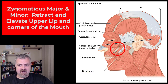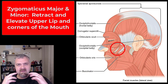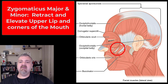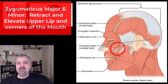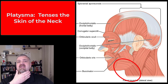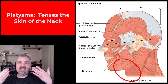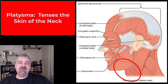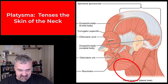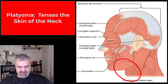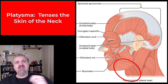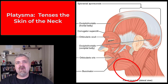The zygomaticus muscles are involved in smiling — they retract and elevate the upper lips, as you can see here. The platysma is a very thin, plate-like muscle on the front of the neck — that's what platysma means. It just tenses the skin in your neck. You generally don't know it exists unless you get in a car accident with whiplash — a hyperflexion or hyperextension injury can pull that muscle and make the front of your neck very sore.